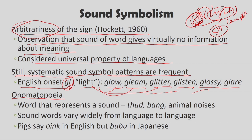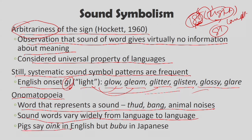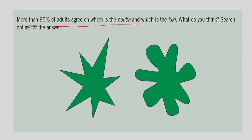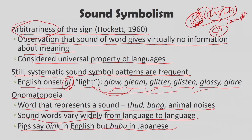There is also onomatopoeia — words that express certain sounds, such as bang, oink, ping, or a cat's meow. These sound words vary widely from language to language; for example, the pig says oink in English but booboo in Japanese. Interestingly, more than 95 percent of adults agree on which shape is booboo and which is kiki when shown the corresponding visual stimuli, demonstrating some cross-linguistic sound-symbol consistency.